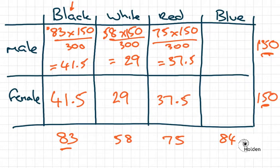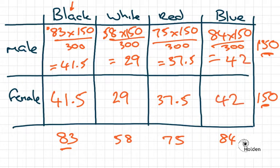In an ideal mathematical predictable world, everything is nice and dandy. So for blue male, 84 times 150 divided by 300 gives us a total of 42. So that's how we go about calculating our expected frequencies.